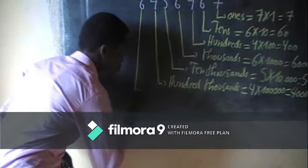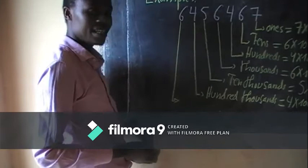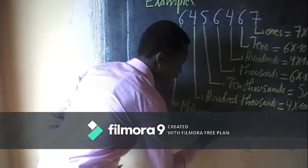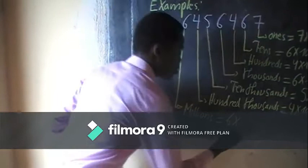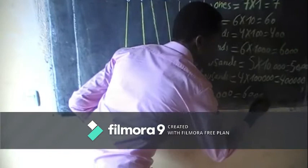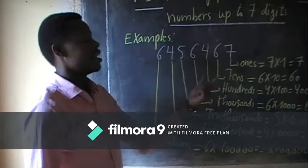Then the last one: six belongs to the millions place. To find the value of this number, you take six times one million. So you write six followed by six zeros — one, two, three, four, five, six — giving us six million.